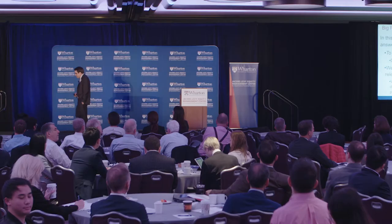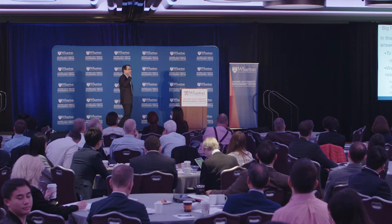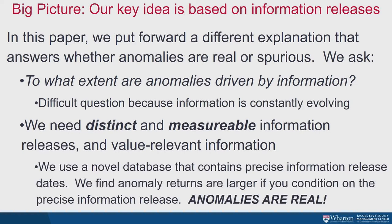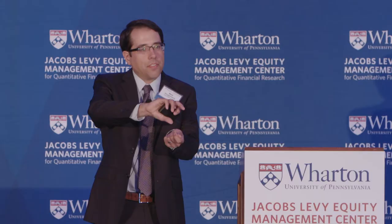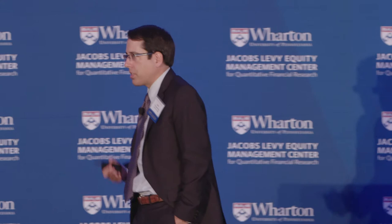Here's the idea. We're going to think about a subset of asset pricing anomalies—often based on accounting research—where there are distinct and measurable information release dates. Then we're going to look at whether returns decay after these information release events. If asset pricing anomalies are real, key information comes out, arbitrageurs start trading on it very quickly, and the returns decay away. On the other hand, if anomalies are spurious—if they're data mining, if they're Nicolas Cage and swimming pools—you would expect to see no such pattern.